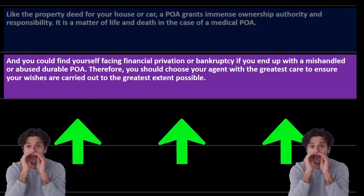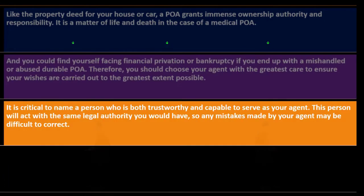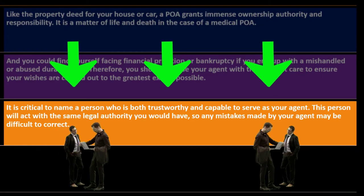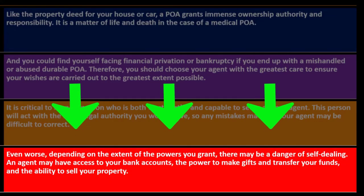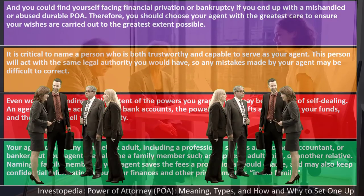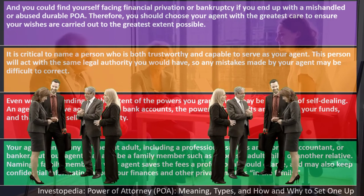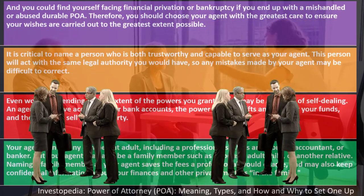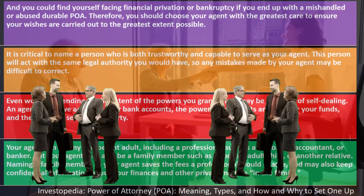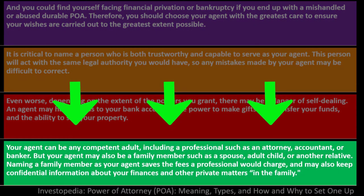You could face financial ruin or bankruptcy if you end up with a mishandled or abused durable POA. Therefore, choose your agent with the greatest care. It is critical to name a person who is both trustworthy and capable, as this person will act with the same legal authority you would have. Mistakes made by your agent may be difficult to correct, and depending on the extent of the powers granted, there may be a danger of self-dealing — where the agent has access to your bank accounts, the power to make gifts, and the ability to sell your property.